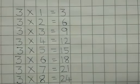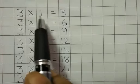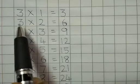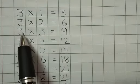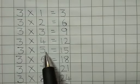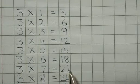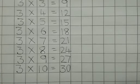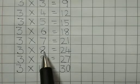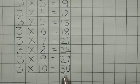So children, in this way you have to write the tables. But it is for learning, so you have to learn by heart. Let's say the tables — say with me: Three ones are three. Three twos are six. Three threes are nine. Three fours are twelve. Three fives are fifteen. Three sixes are eighteen. Three sevens are twenty-one. Three eights are twenty-four. Three nines are twenty-seven. Three tens are thirty.